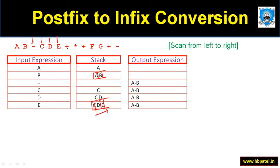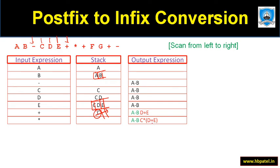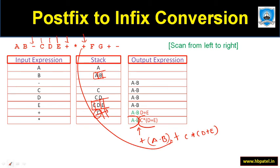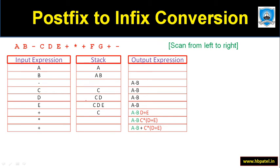Plus means we pop the top two: 'd' and 'e' are popped and plus is added between them giving 'd + e'. Next comes multiplication — we have only 'c' left on the stack, so we multiply: 'c * (d + e)'. This is a separate expression from 'a - b', but the moment we see plus, it connects them: 'a - b + c * (d + e)'.